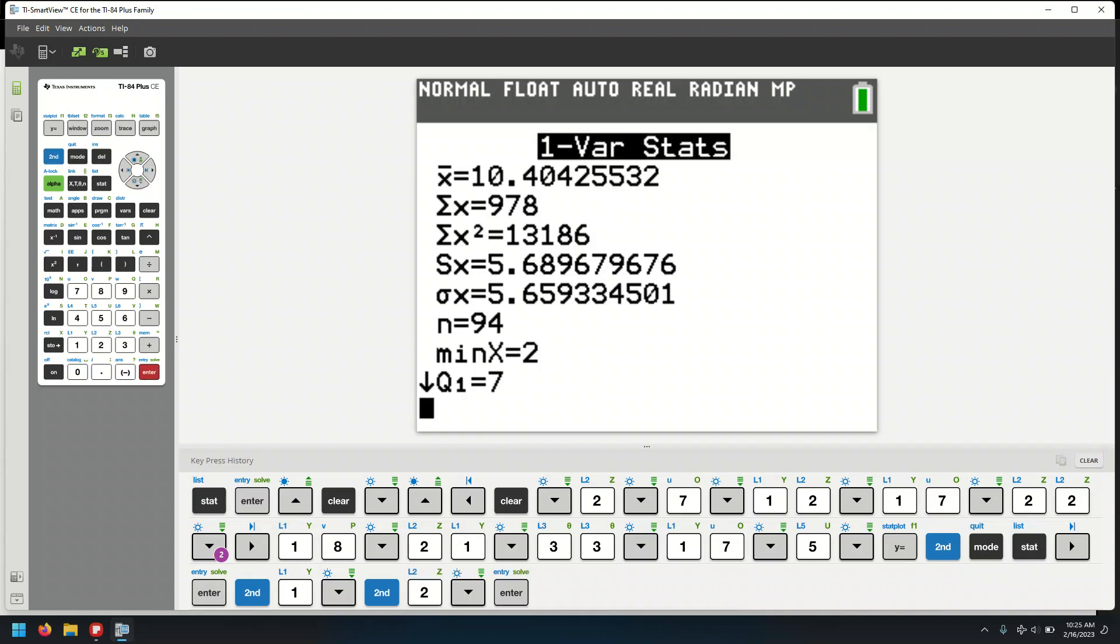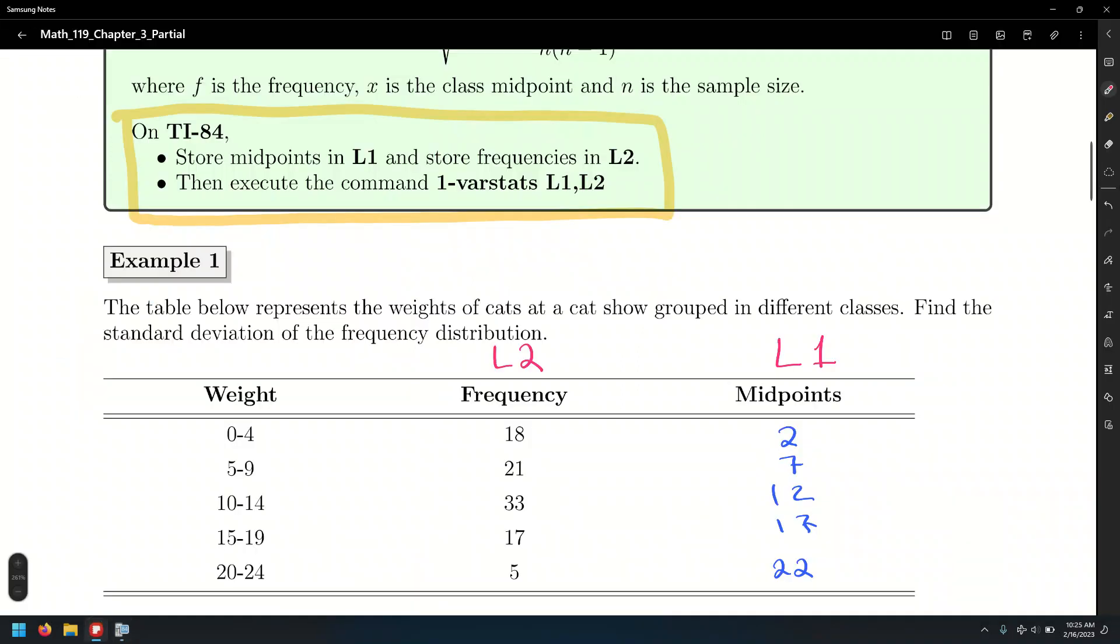And that should give us a mean of 10.4, and the standard deviation of, well, in this case, we need to be careful, because we need to determine whether this is a sample or a population. So, let's go back to the context of the problem. Here, it doesn't say anything about a sample. It's the weight of cats at a cat show. So, it's all the cats.